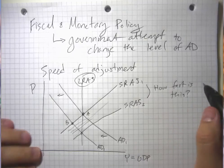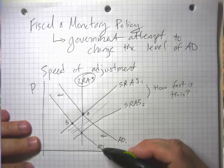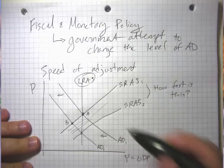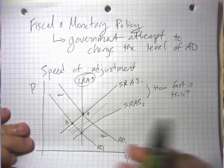One thing to notice here is that how easily this can happen depends upon the shape of the aggregate demand curve.